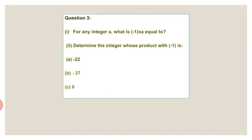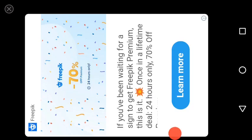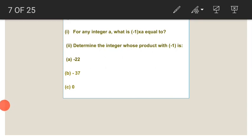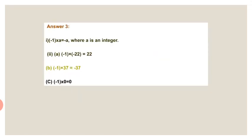Then the third sum, first option: for any integer A, what is minus 1 into A? A represents any integer number. Then the second option: determine the integers whose product with minus 1 is minus 22, minus 37, and 0. These 3 numbers represent the right-hand side answer. So using minus 1, you need to solve the given question. Minus 1 into A is equal to minus A, where A is an integer.